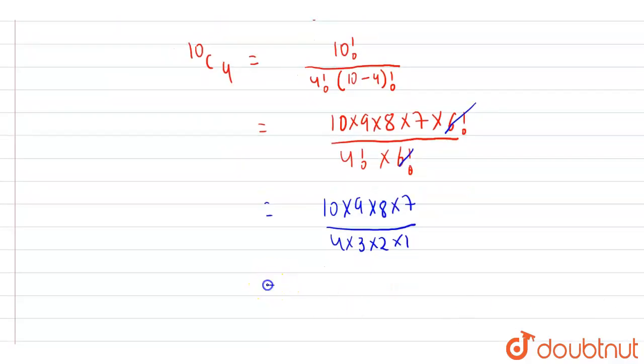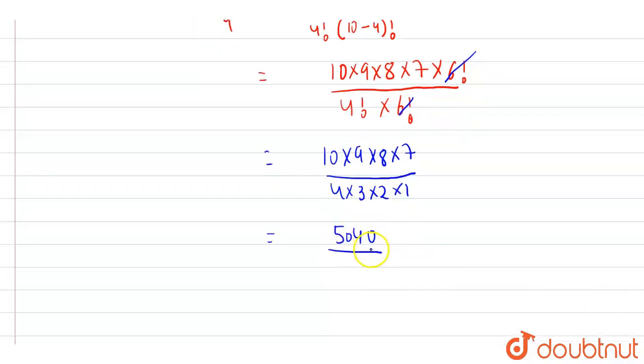Now if we multiply the numbers in the numerator, we get 5040. If we multiply the numbers in the denominator, we get 24. Now if we divide 5040 by 24,